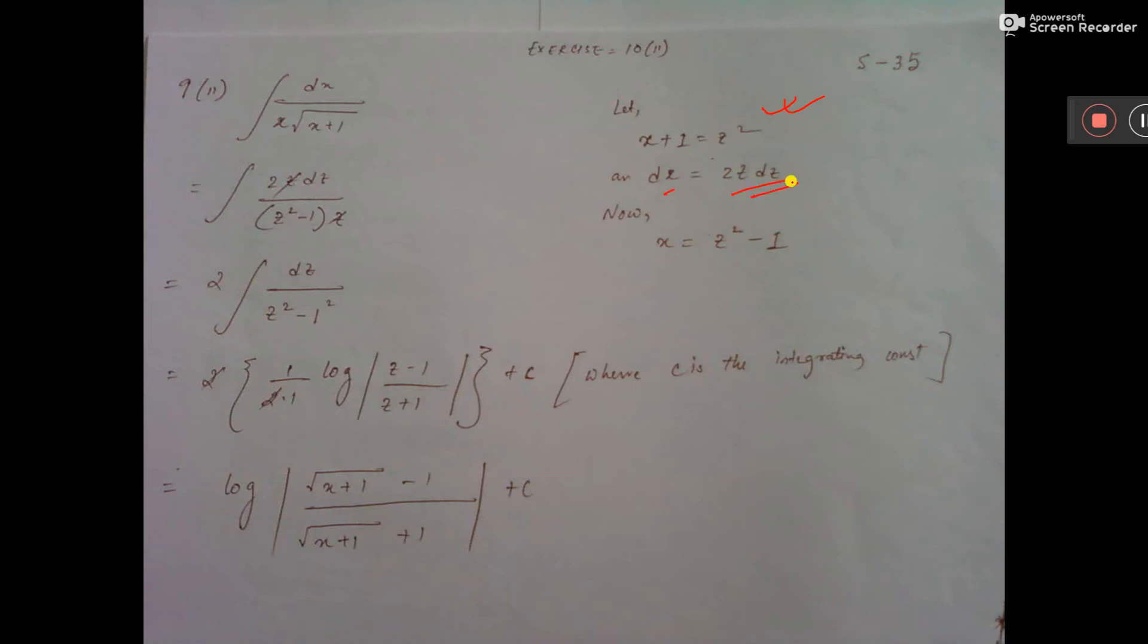That means dx equal to 2z dz, and x equal to z square minus 1.